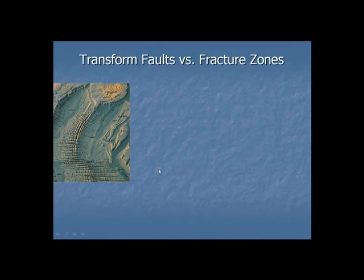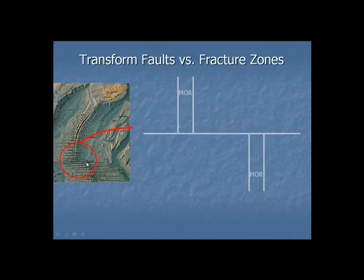If you've ever noticed along the mid-ocean ridge, it has these areas where it scoots over — it's offset or bisected by these fault-like features, which are really transform faults and fracture zones. And then it continues on its way. You can see the small ones here. What I'd like to show you is how this all works, so let's enlarge this area. Here's the mid-ocean ridge. Notice how it's cut or bisected by one of these transform fault fracture zone features.